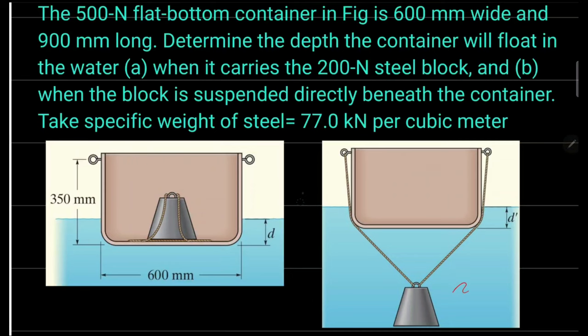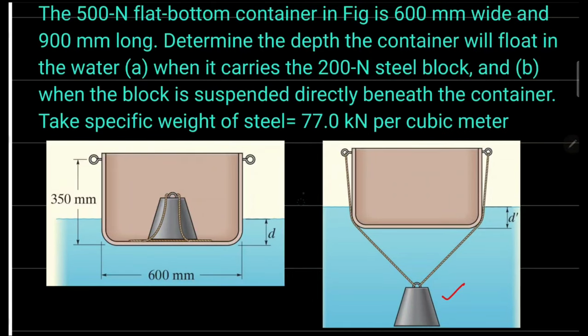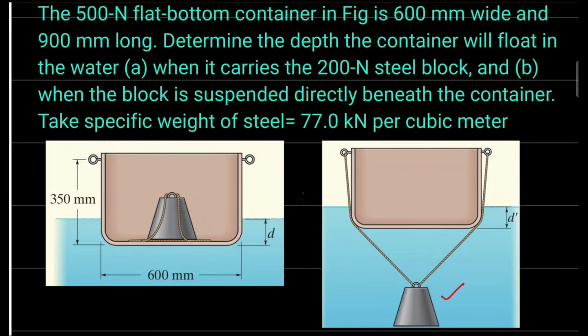There are two cases: case A, when the container carries a 200-newton steel block placed inside it; and case B, when the steel block is suspended directly beneath the container. We assume the specific weight of the steel block is 77 kilonewtons per cubic meter.